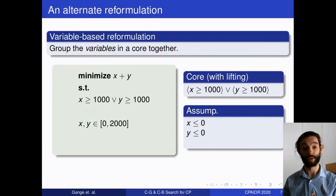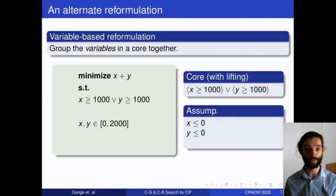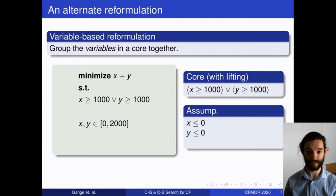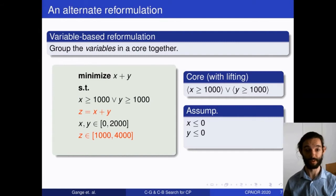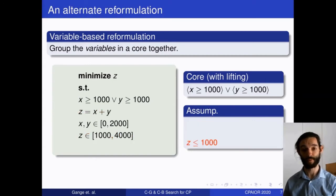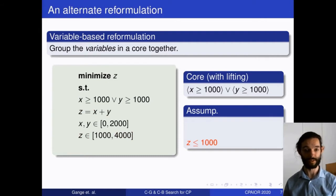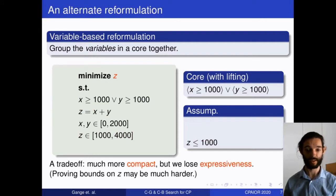An alternative, moving further from the max-SAT view: since we have integer variables, why not just glue the variables in a core together? We get a core saying at least one of x and y has to take a penalty, introduce a new variable z = x + y with a lower bound of at least 1000, replace both x and y in the objective with z, set assumption z ≤ 1000, and find it satisfiable. This is much more compact — the number of terms is bounded by the number of original variables.